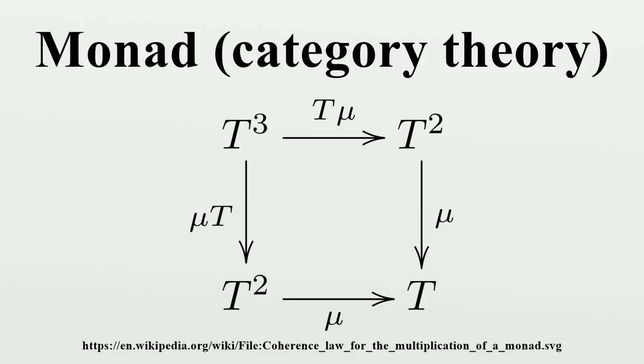The example about free groups given above can be generalized to any type of algebra in the sense of a variety of algebras in universal algebra. Thus, every such type of algebra gives rise to a monad on the category of sets.